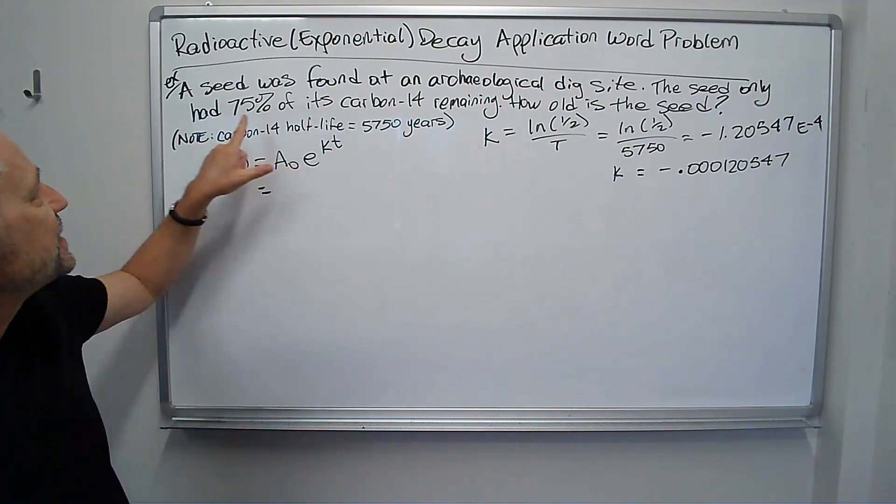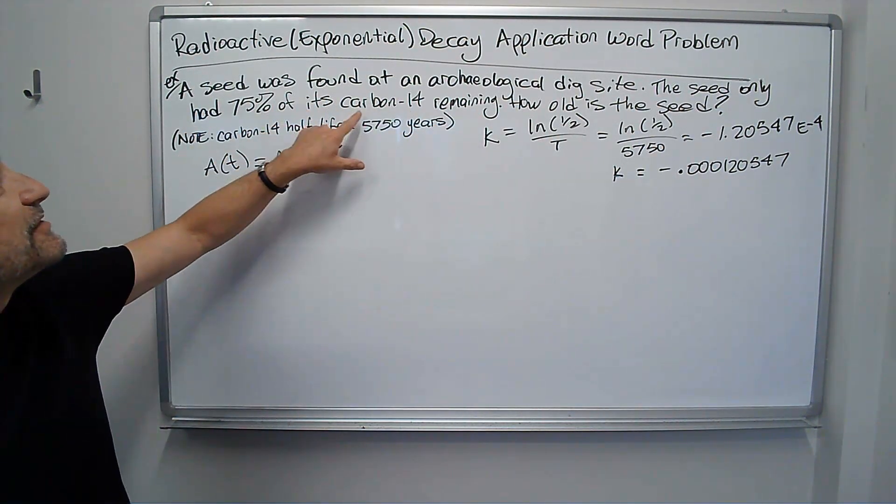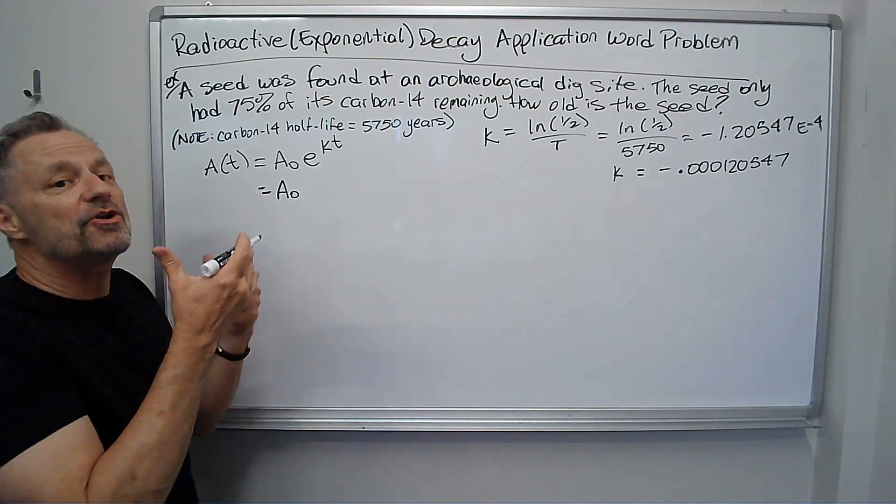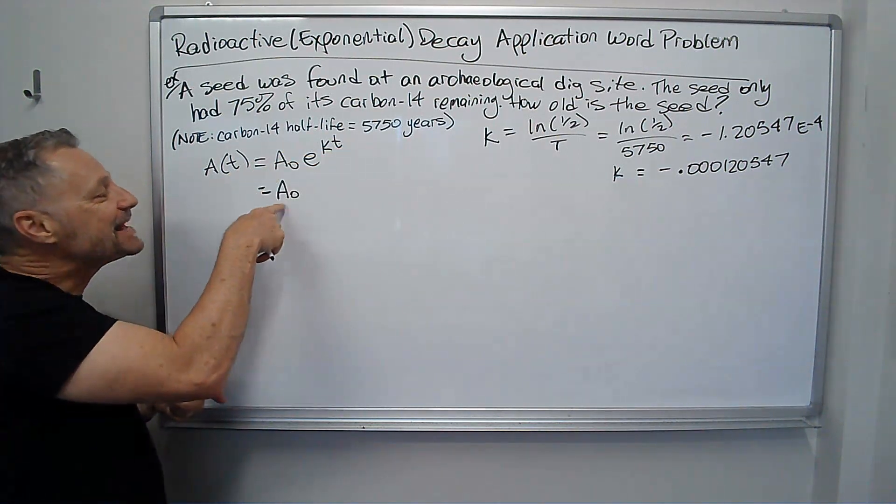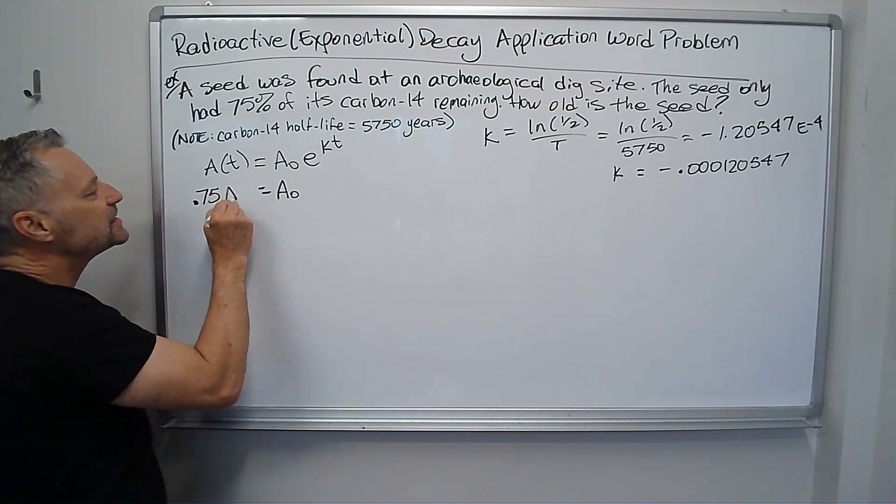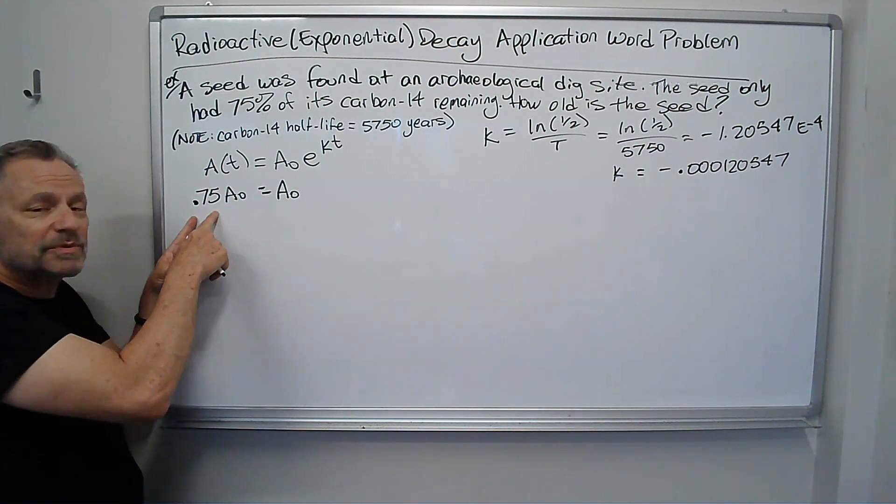Okay, so here's what I do. It says the seed was found. It had 75% of its original carbon-14. So if I started with A sub 0, and I don't know how much that is, but I have 75% of this left. So I go, oh, 75% of whatever A sub 0 was. That's what's left.